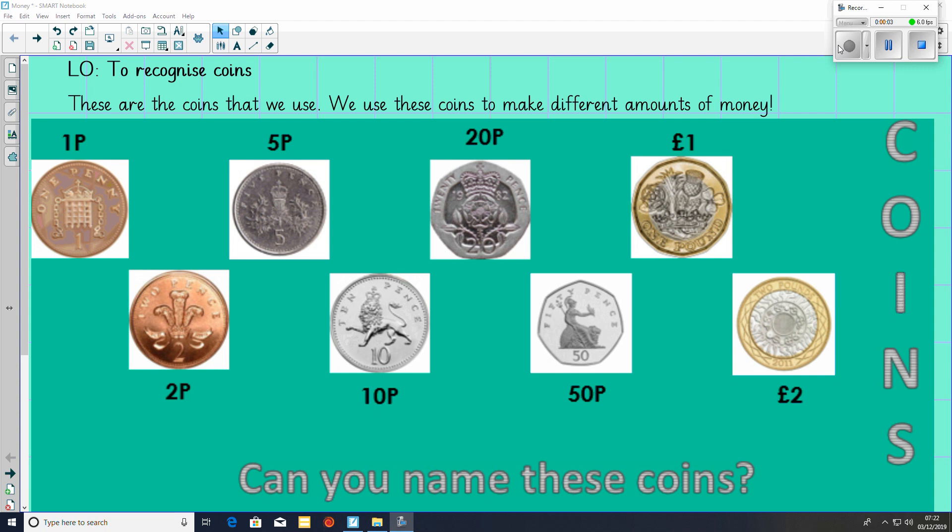In Year 2, we have been learning about money. Which of these coins is worth the least and which of these coins is worth the most money? We should have said 1p is worth the least and 2 pounds is worth the most.